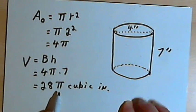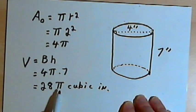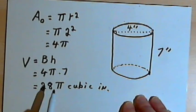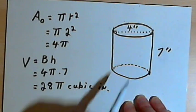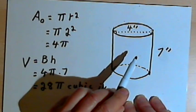And if we wanted to, of course, we could take that pi and either use a rough estimate for it, something like 3.14, or we could put it into a calculator, multiply it by 28, and we'd find out approximately how many cubic inches we have in this cylinder.